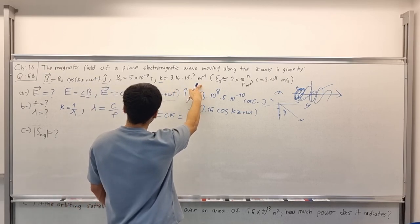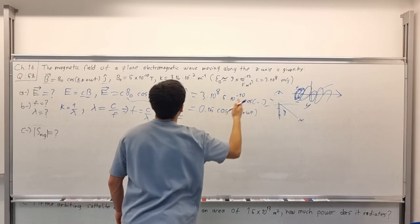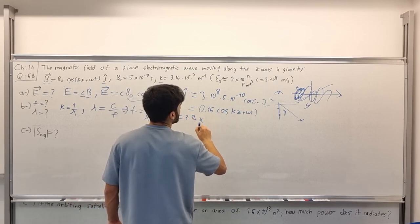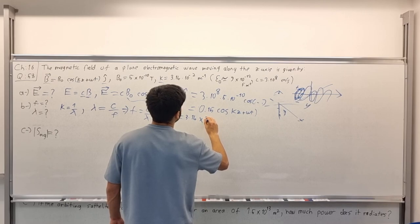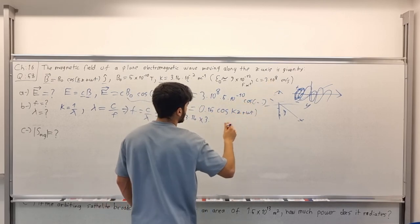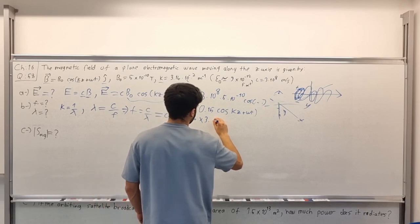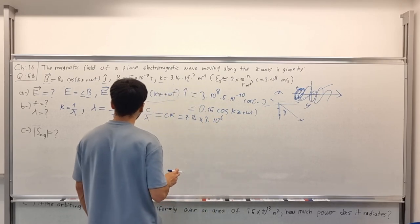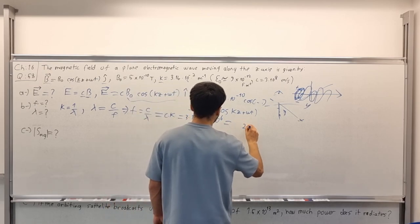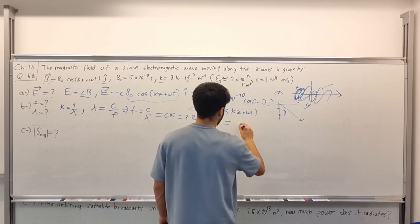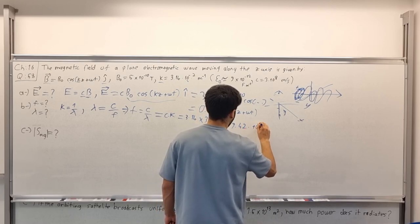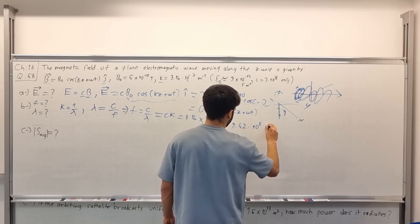Numerically, frequency equals c times k, which gives us 3 × 10⁸ times 3.14 times 10¹, resulting in approximately 9.42 × 10⁶ Hz.